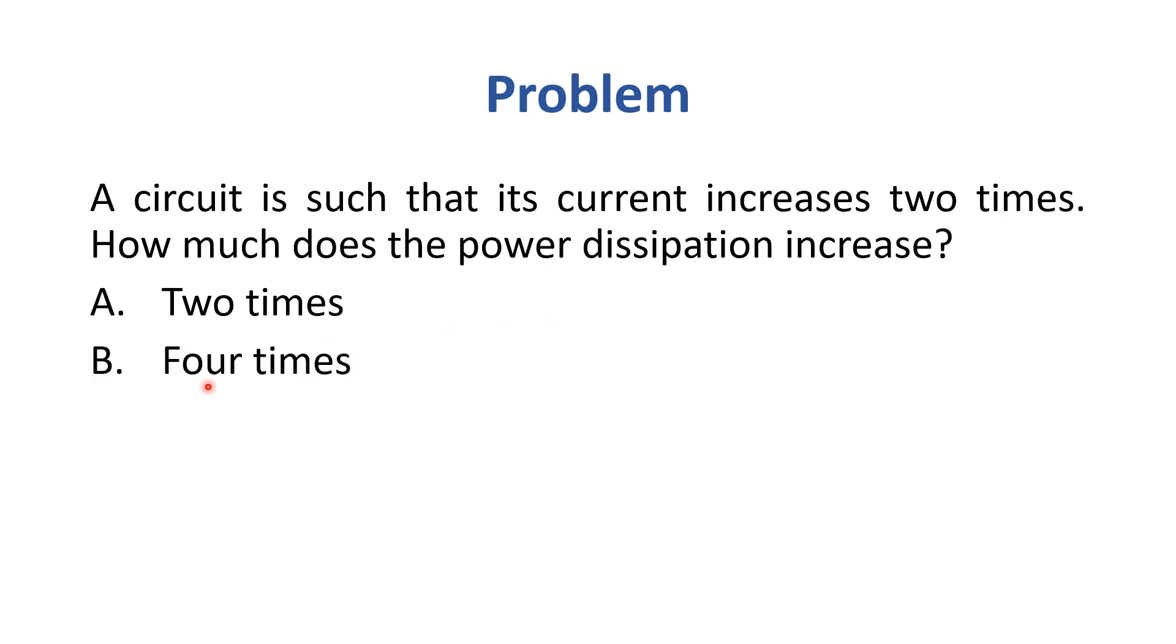Options: two times, four times, half, or remains the same. The correct answer is option B, four times. P equals I squared R. So if resistance is constant, power has an I squared relation. Current doubles, but power increases four times.